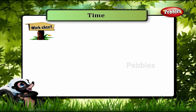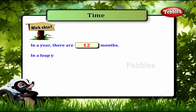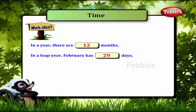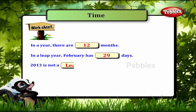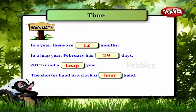Worksheet. In a year, there are 12 months. In a leap year, February has 29 days. 2013 is not a leap year. The shorter hand in a clock is the hour hand.